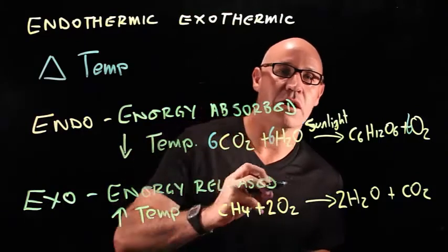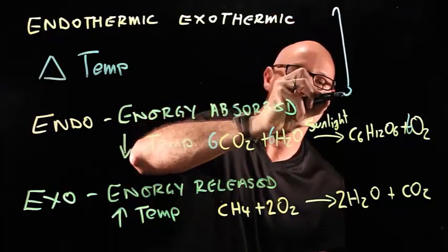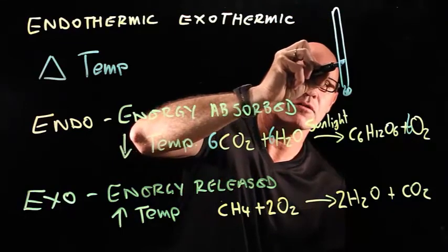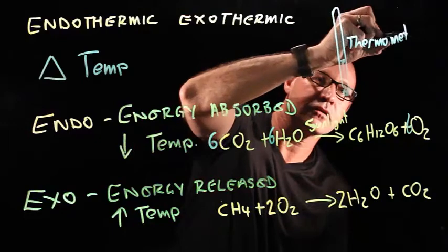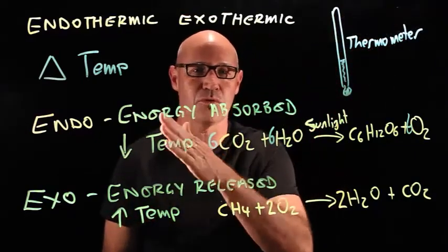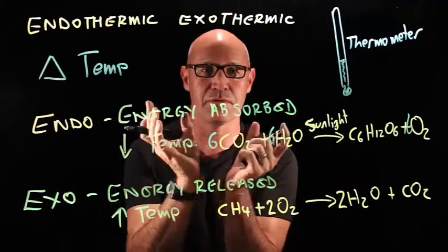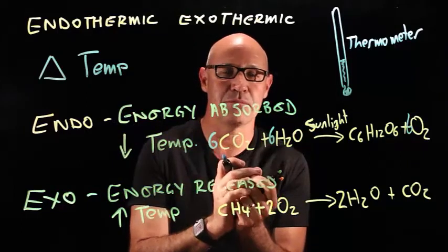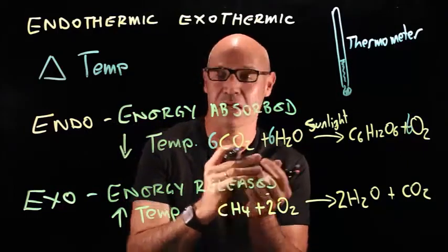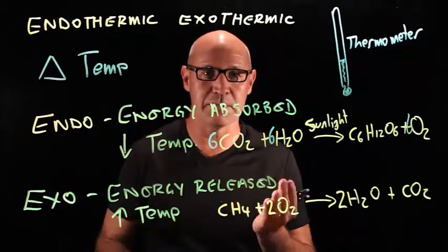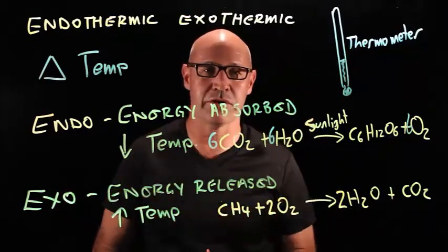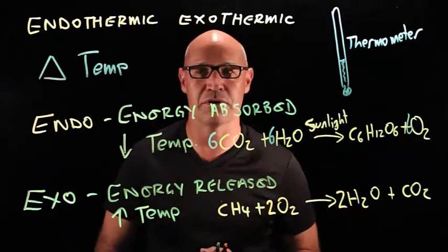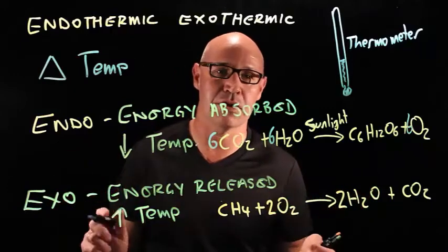It's actually quite simple. All you need is a thermometer. What you're going to do is measure the temperature before the reaction — measure the temperature of the reactants — then put them together and measure the temperature of the products. That's it. If the temperature increases, it's an exothermic reaction. If the temperature decreases, it's endothermic. If there's no change, it's neither exo nor endothermic.